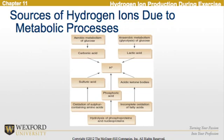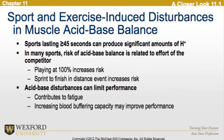The diagram below represents the sources of hydrogen ions due to the metabolic processes just discussed. Looking at sports and exercise-induced disturbances in muscle acid-base balance, we see that sports lasting greater than 45 seconds can produce a significant amount of hydrogen ions. In many sports, risk of acid-base imbalance is related to the effort of the competitor — playing at 100% increases the risk, as does a sprint to the finish in distance events.